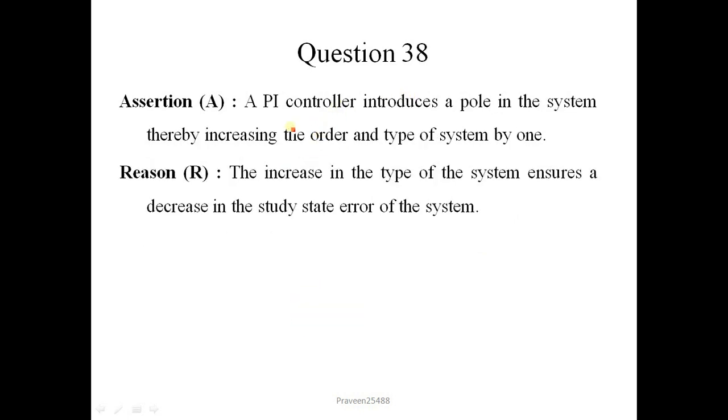Question number 38. A PI controller introduces a pole in the system, thereby increasing the order and type of system by 1. So the order of the system is identified as the highest power of s in the characteristic equation, and the type of the system is given by the number of poles at the origin. So as a pole is introduced it increases the order and type of the system by 1. So this statement is correct. The reason is the increase in the type of the system ensures a decrease in the steady state error of the system. This is also correct. Correct option is 1.